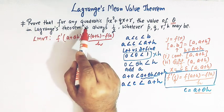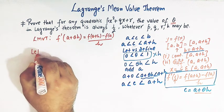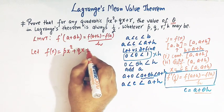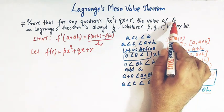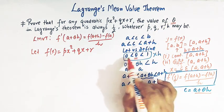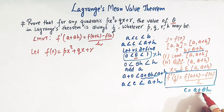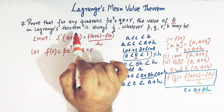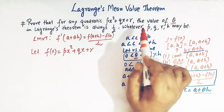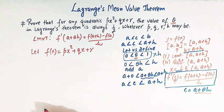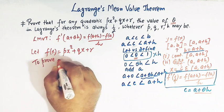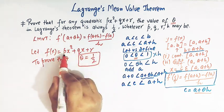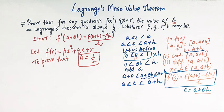So now let us come to the problem. We have to prove that for any quadratic function — let us call it f of x — where f of x is px squared plus qx plus r, the value of theta in Lagrange's theorem is always half, whatever be the values of p, q, r, and h. So we have to prove that theta equals one-half, whatever be the values of p, q, r, and h.